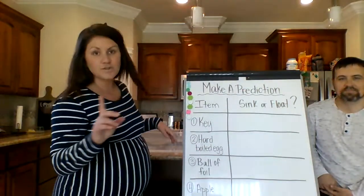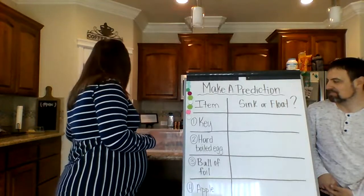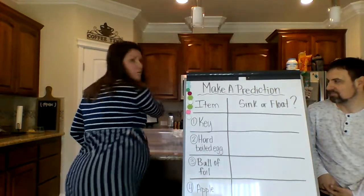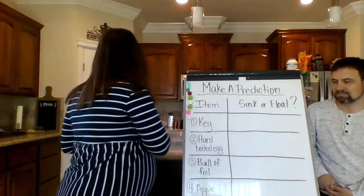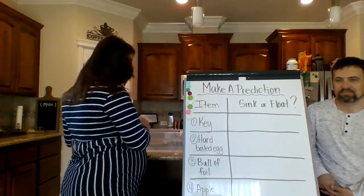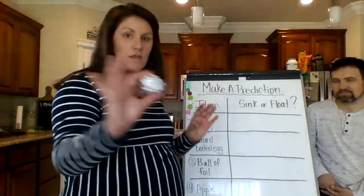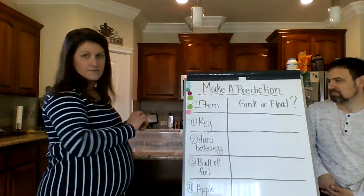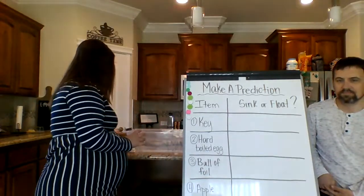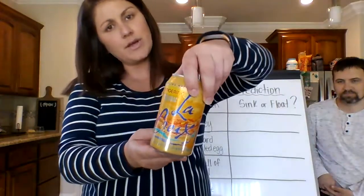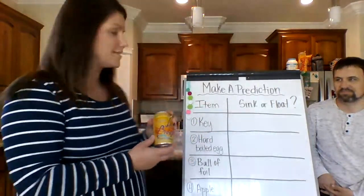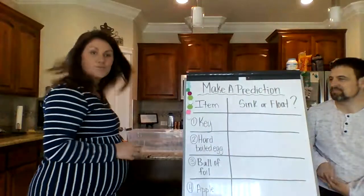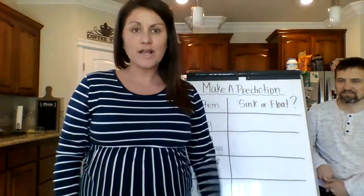Let me show you all of our items. We have a key right here, a hard-boiled egg — it's hard-boiled, that might make a difference — some foil that I crumpled up into a ball kind of loosely, not super tight. We have an apple, a full soda can — it's one of my LaCroix that I drink all the time — and at the very bottom, one of our rulers from class. If you're doing this at home, you can pick any six items or however many you want around the house.